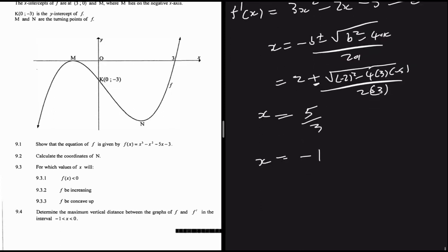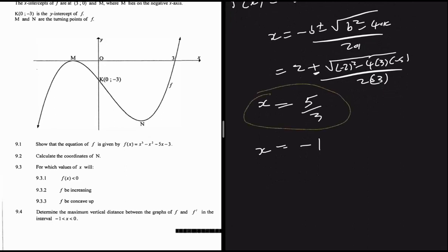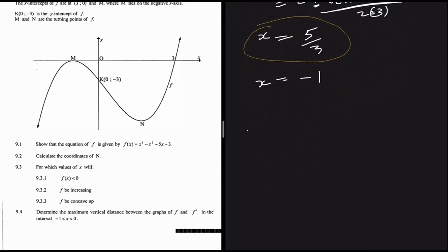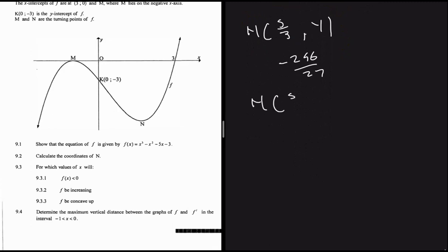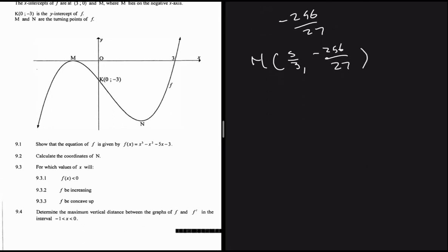Substituting x = 5/3 into f(x): f(5/3) = (5/3)³ - (5/3)² - 5(5/3) - 3 = -256/27. So the coordinates of N are (5/3, -256/27).